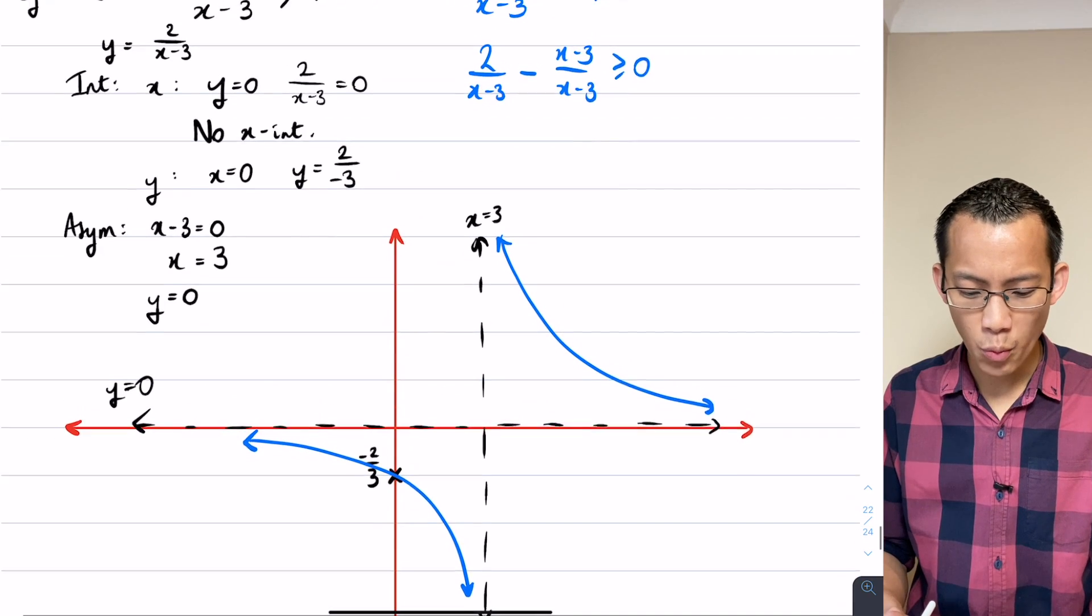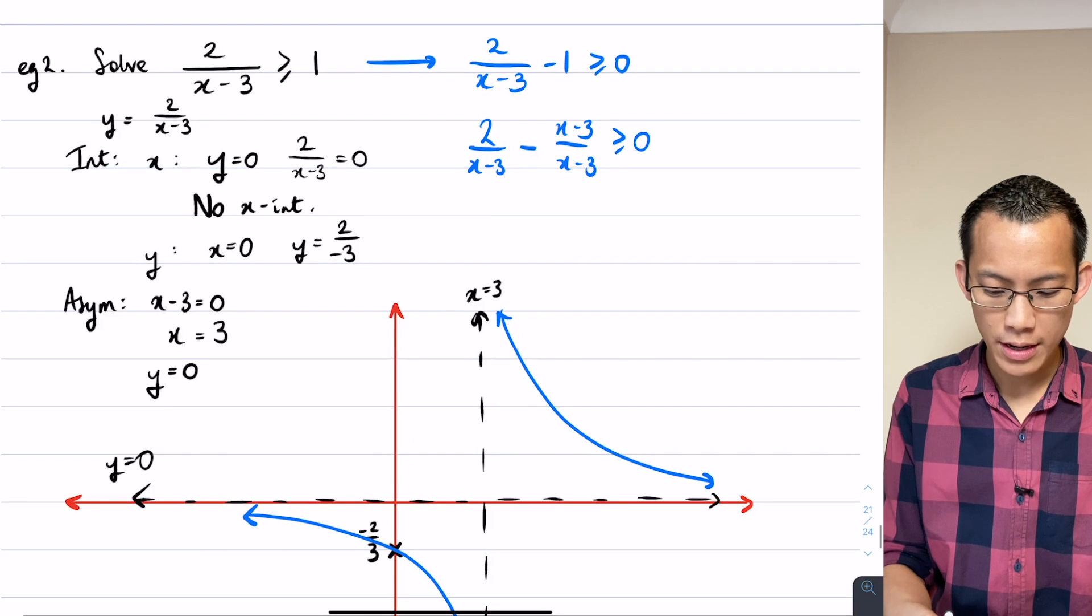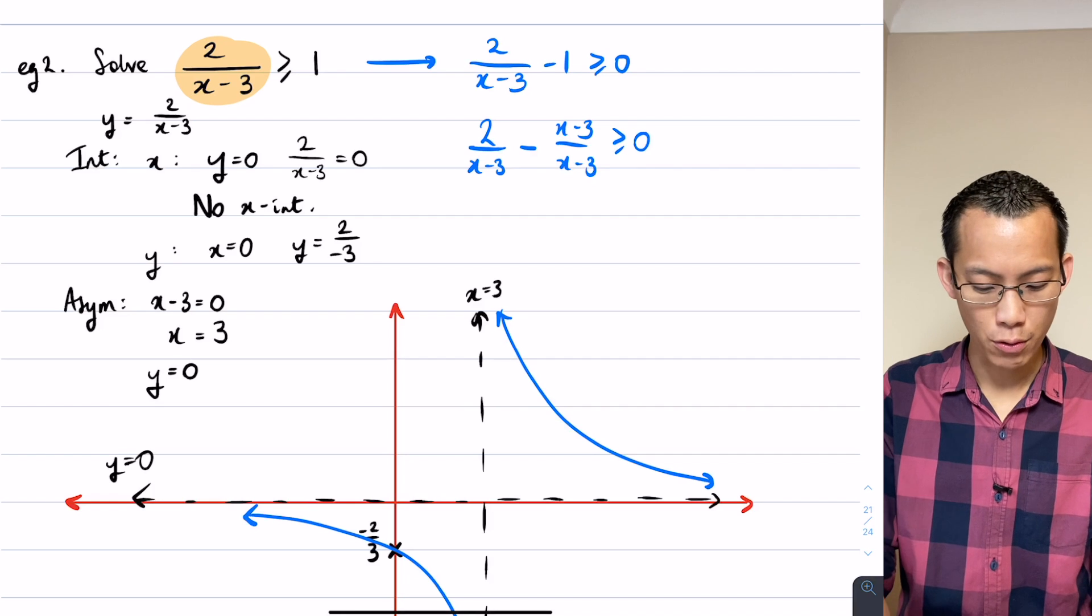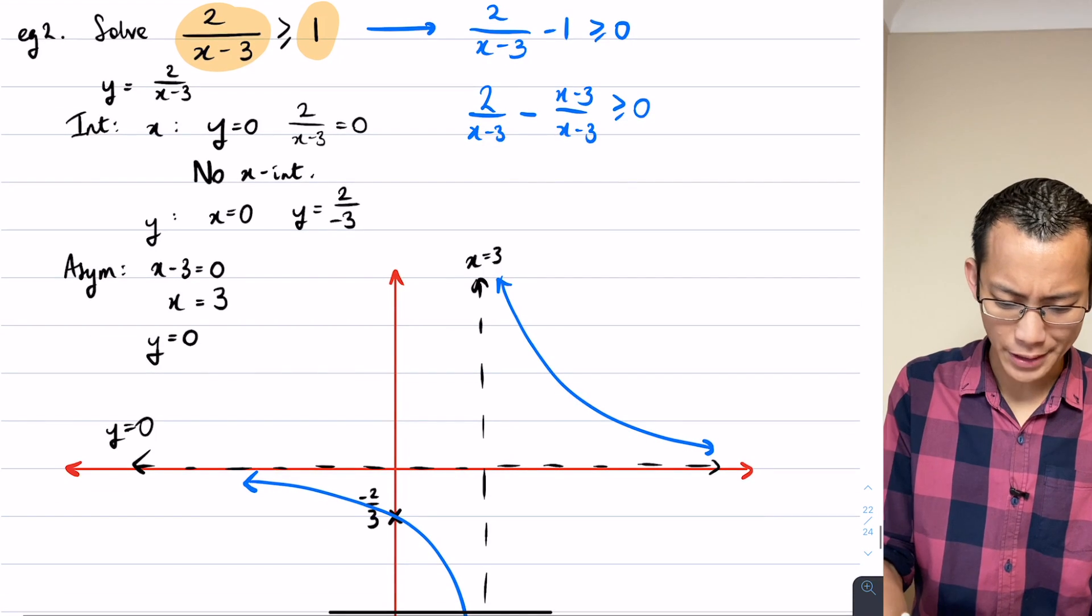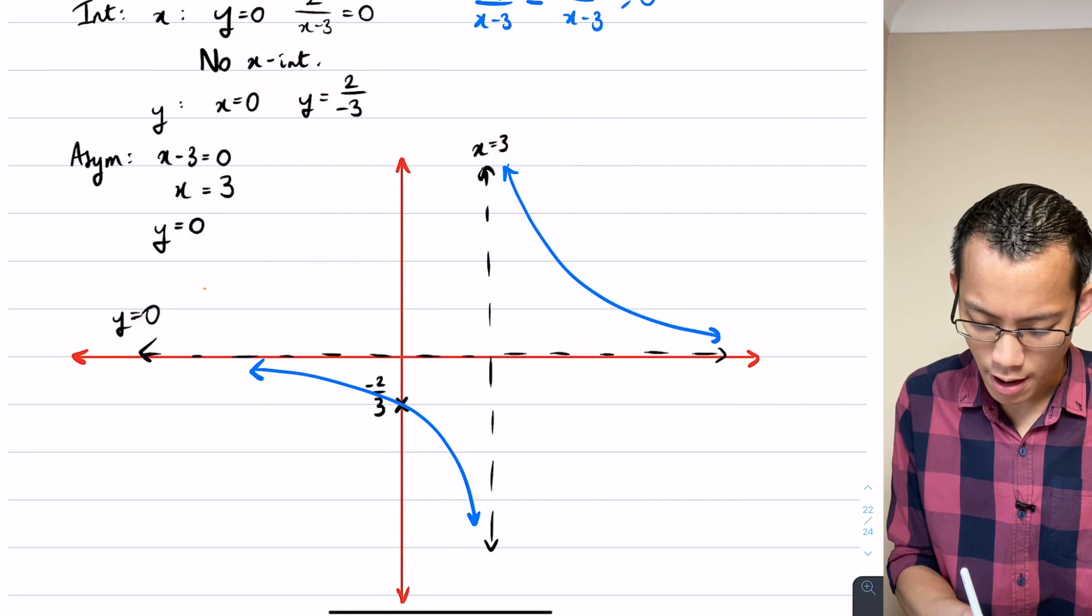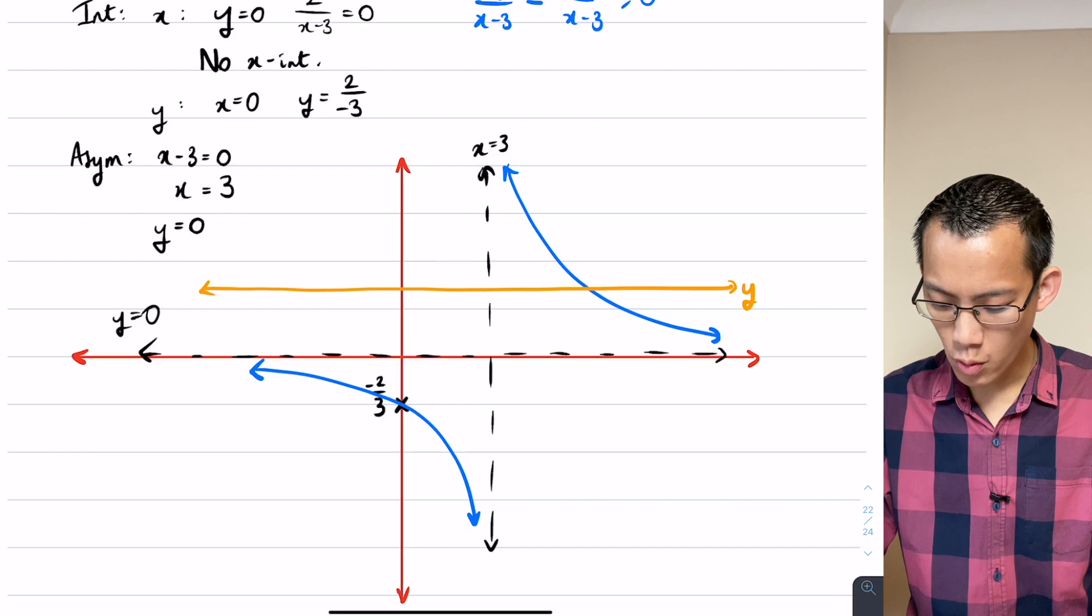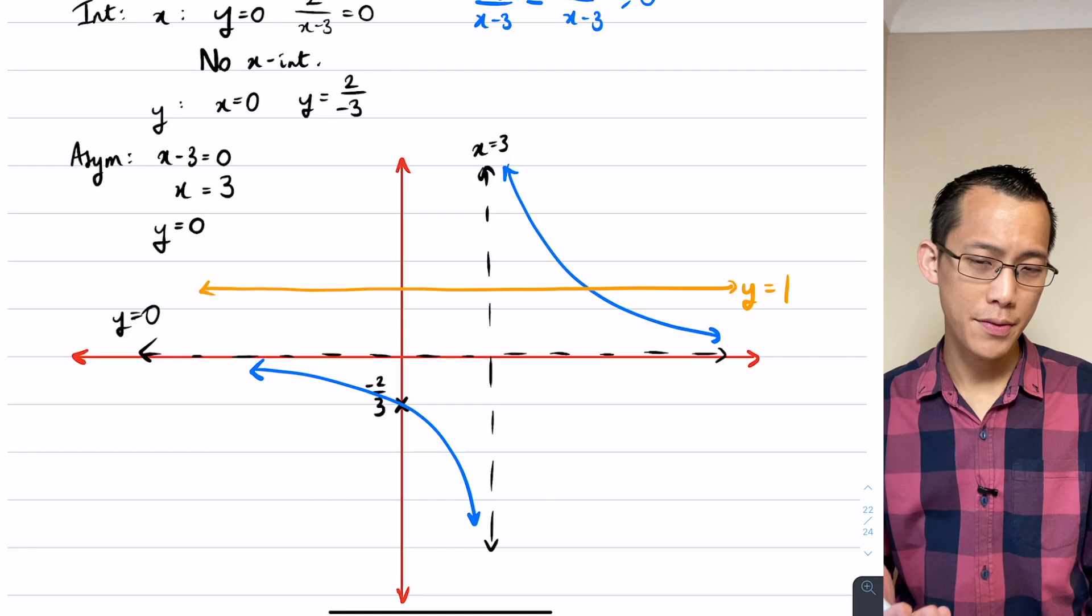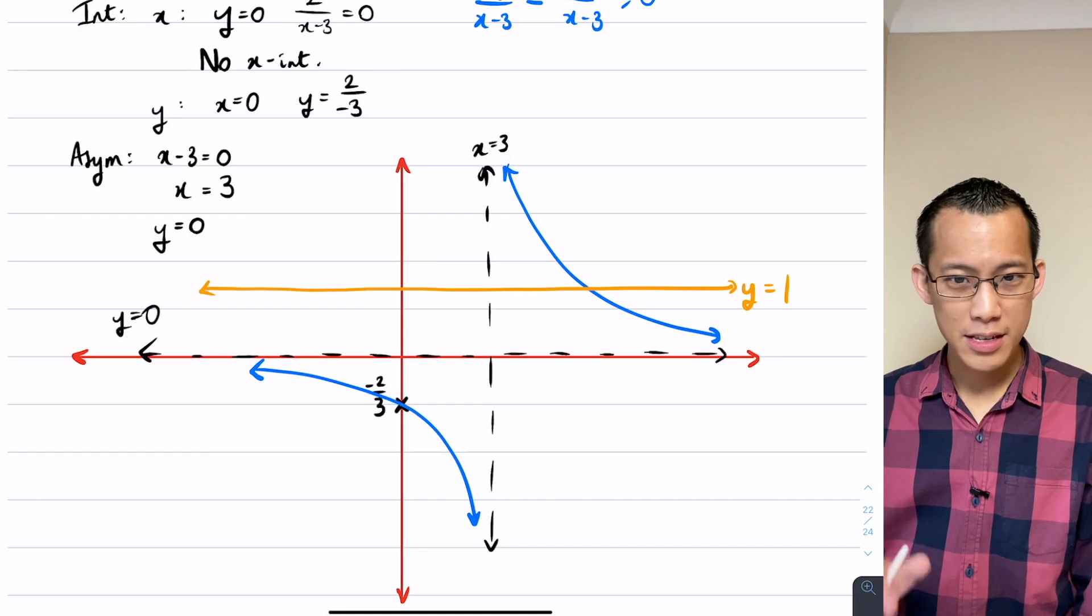So now I want to say, well when is this thing, going back to the original question up here, when is this graph over here, when is it above or greater than 1? Well where is that? Where is y equals 1? y equals 1 would be around here. Here is y equals 1. So which is the part of the graph that's relevant to my solution? When is the hyperbola above this orange line?